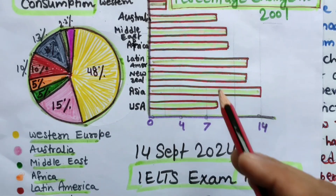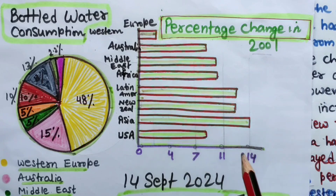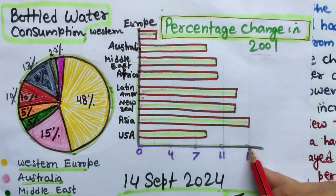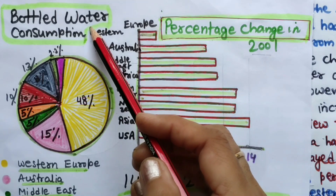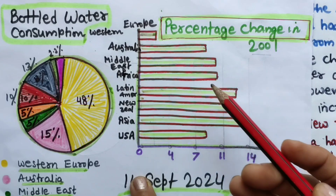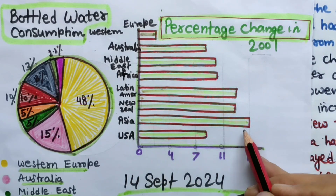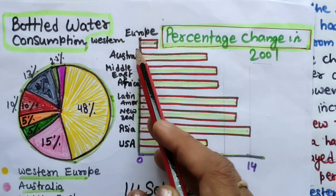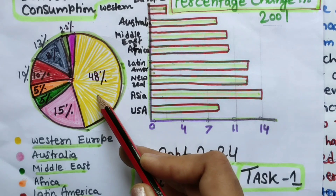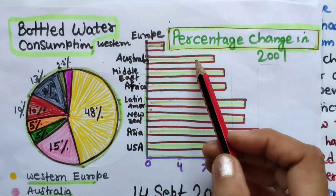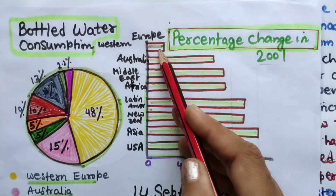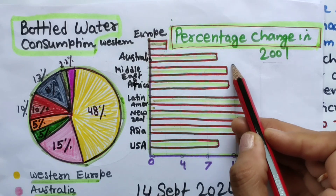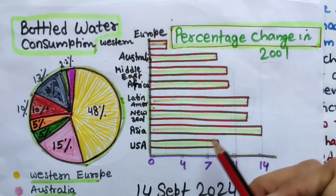Now let's analyze the bar graph. The highest and longest bar is related to Asia and it is touching 14 — that is 14%. Surprisingly, Western Europe was highest in bottled water consumption in the pie chart, but the percentage change is least in Western Europe, and Asia is number one. These two are also equal, and these two are also equal — so when writing the detail paragraph, I will combine those two countries.